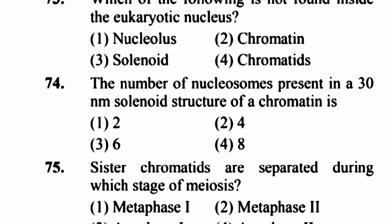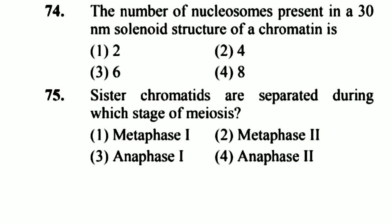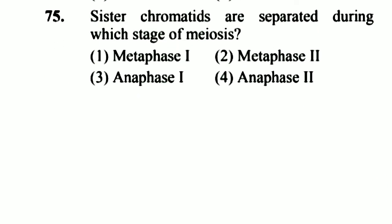Question 74: What is the number of nucleosomes present in a 30 nm solenoid structure of chromatin? The answer is 6. Option 3 is right.